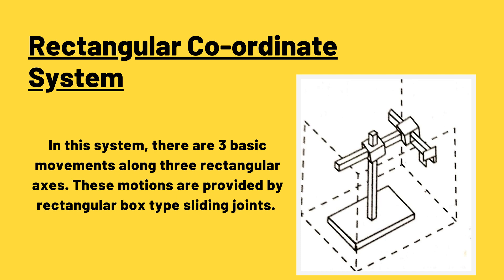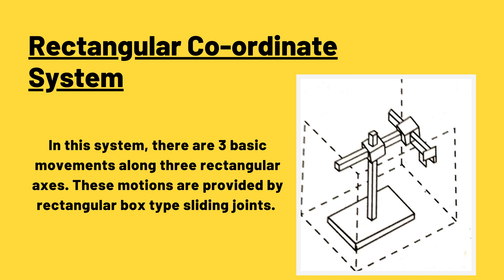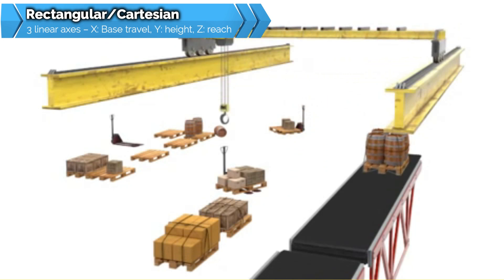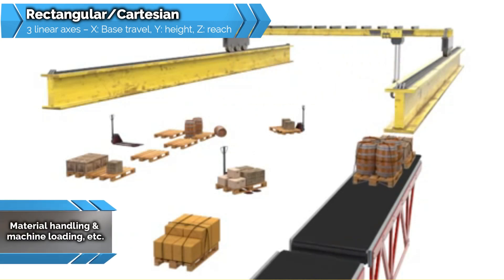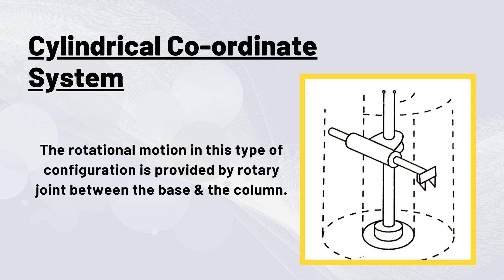First, we have rectangular or Cartesian configuration. In this system there are three basic movements along three rectangular axes. These motions are provided by rectangular box-type sliding joints. The vertical motion is provided by the joint on the vertical column of the robot's base. The two horizontal motions are provided by the joints on the horizontal arms, one mounted on the column and another on the arm. This configuration is suited for straight-line movements and side-to-side movements, and these robots are used for pick and place operations such as material handling and machine loading.